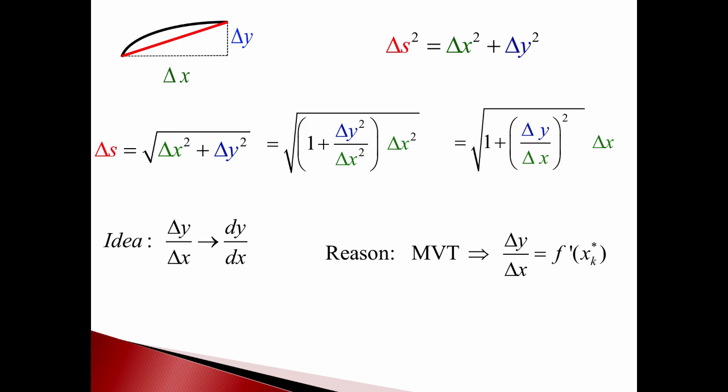Technically what really happens is we use the mean value theorem here. So delta y over delta x is actually equal to the derivative at some point in that interval, and we can replace that with the actual derivative.